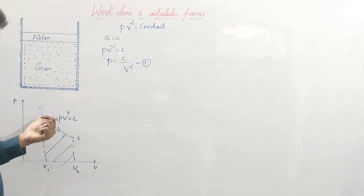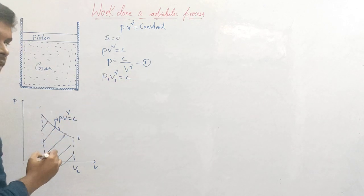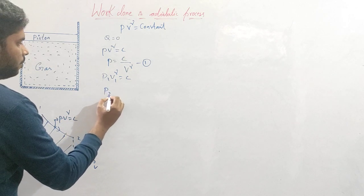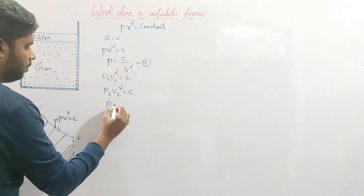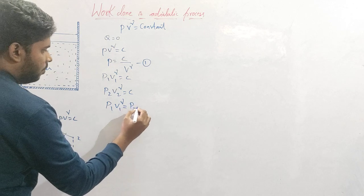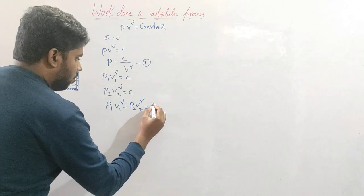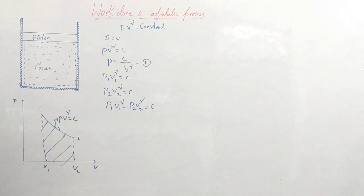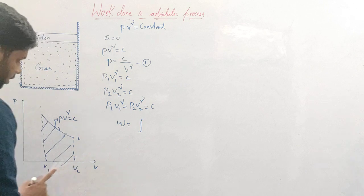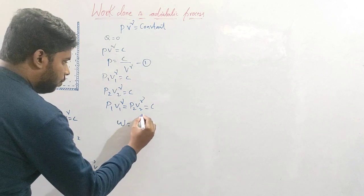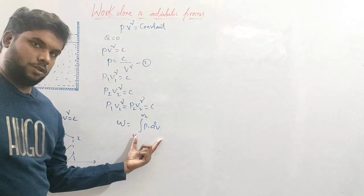Applying this law at state one: p1 V1^γ = constant C. At state two: p2 V2^γ = C. From these two we get p1 V1^γ = p2 V2^γ, which is another relation equal to constant C. Now, work done is equal to the integral from V1 to V2 of p dV. We have already derived this expression in the previous video.